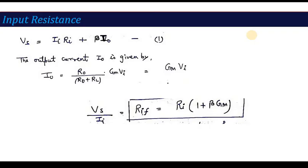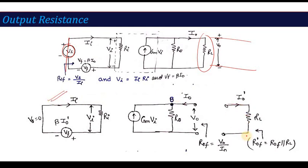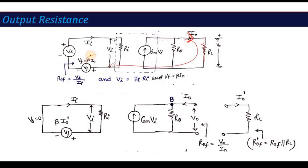Now we derive the output resistance. To find output resistance, we short the input source and open the load resistor RL from the circuit. When RL is removed, the output current i0 that was flowing through RL — called i0-dash — is what feeds back as beta*i0-dash. The current inside the circuit through r0 is labeled i0. An important distinction: since we only want output resistance, the effect of RL is not included; if RL were included, the total output resistance would be Rof in parallel with RL.